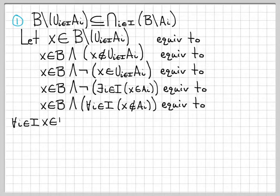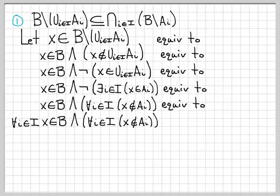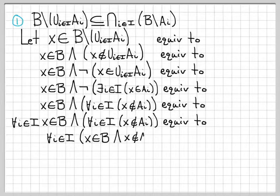Now we do a notational adjustment. X in B is logically equivalent to: for all i in capital I, X is in B — because B is not a function of i, so placing 'for all i in capital I' in front of it doesn't change anything. The rest of the logical expression remains unchanged. So we can factor out the 'for all i in capital I' to get: for all i in capital I, X is in B and X is not in A_i.